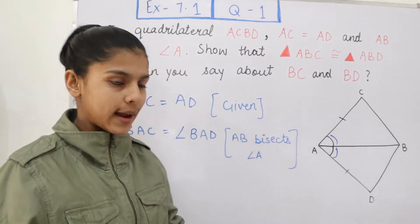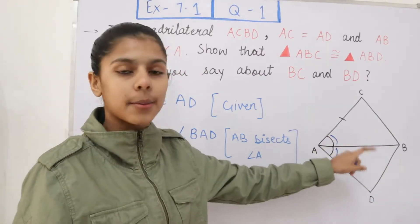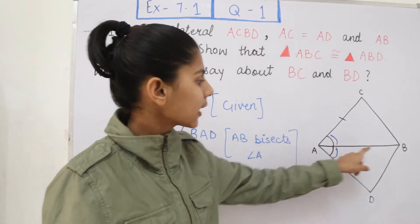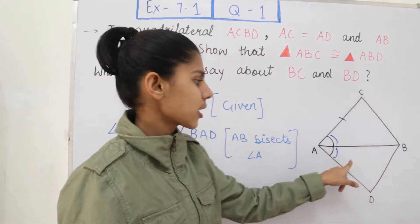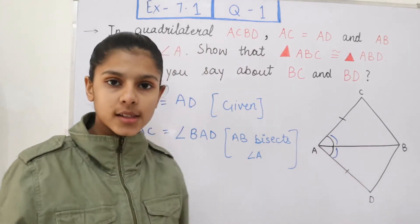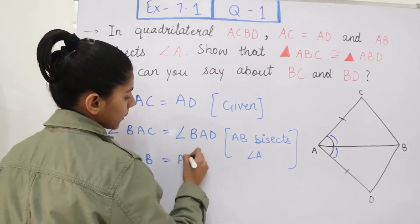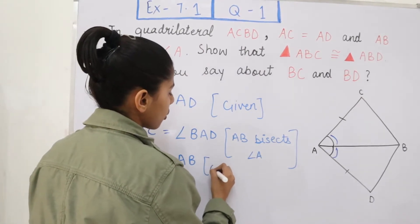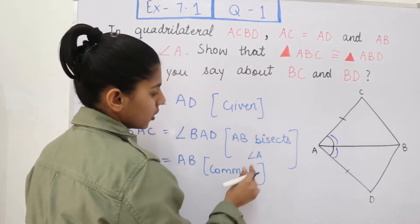You can notice that in both the triangles, their base is common — the common side being line segment AB. AB is part of triangle ABC and also part of triangle ABD. So we can write AB = AB, and the reason we give is 'common', because this line segment is common in both the triangles.